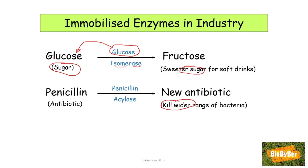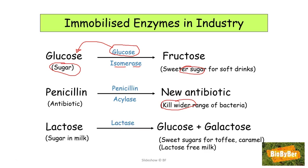Lactose is the sugar found in milk. Many people have a lactose intolerance — they can be allergic to lactose. Lactase — notice the ending '-ase' and the beginning 'lact-', giving us the hint that it acts on lactose — can convert the sugar in milk into sweeter sugars, glucose and galactose. These sugars are used when making toffee or caramel. If lactose is converted into these sugars, then the lactose is no longer in the milk, so you've created lactose-free milk.